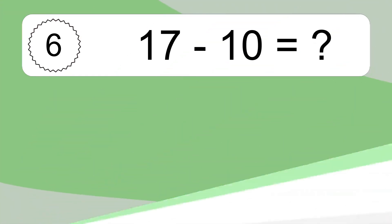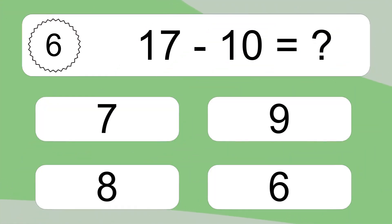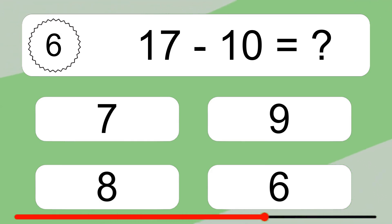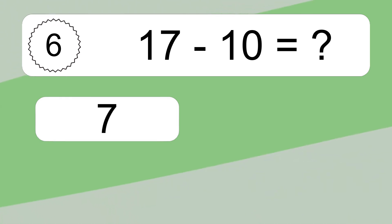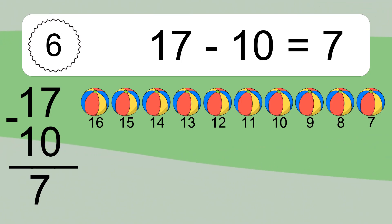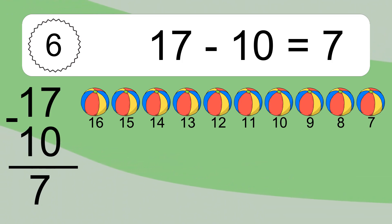17 minus 10 equals what? 17 minus 10 equals 7. Let's count it. 16, 15, 14, 13, 12, 11, 10, 9, 8, 7.